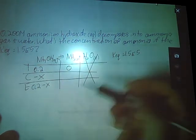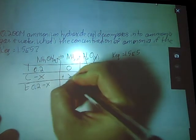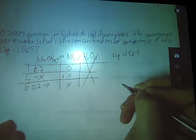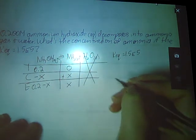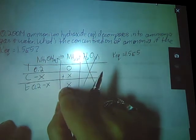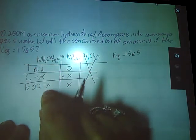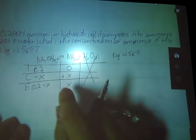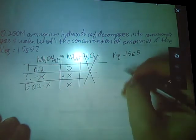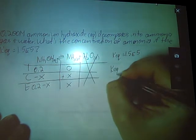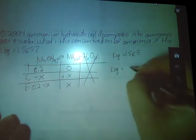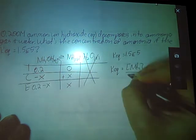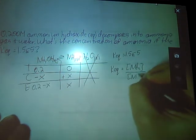Ammonia, on the other hand, is going to go up by x. So my equilibrium concentration will be x. In order to figure out these concentrations, I need to know what x is. Luckily, this gives me enough information. I know that my KEQ is going to be my products over my reactants.